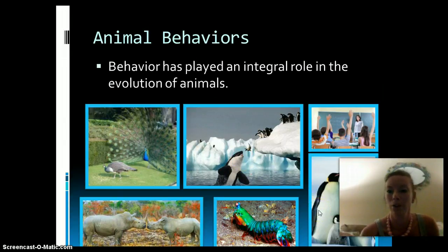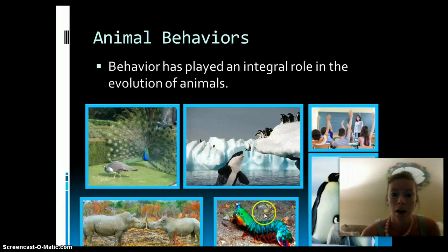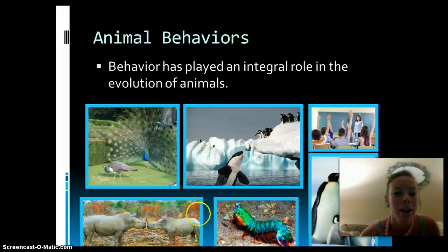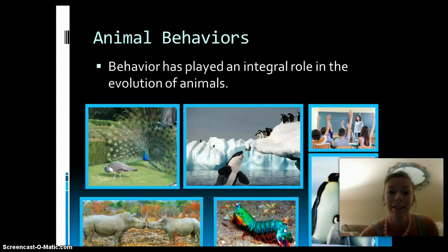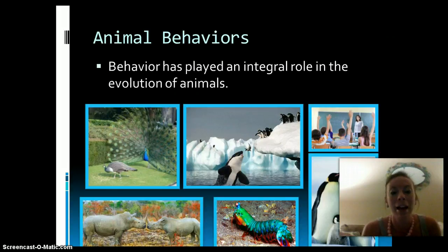These penguins have an incredible courting behavior — so they can survive and reproduce. Rhinoceros spend time with their mother for a really long time — again, so they can survive and reproduce. The mantis shrimp has beautiful colors and is very aggressive and strong — so they can survive and reproduce. And us humans, we have complex learning — and we are here so we can survive and reproduce as well.